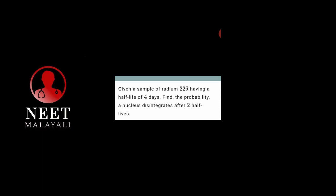First question. Given a sample of radium-226 having a half-life of 4 days, find the probability a nucleus disintegrates after two half-lives. Nuclear disintegration region.